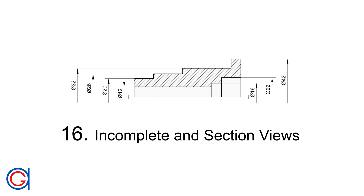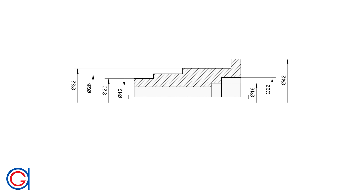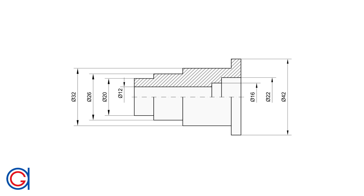Rule 16: How to dimension incomplete or section views. For a half-cut section view of a cylindrical shape, to indicate the diameters we use incomplete dimension lines that elongate a few millimeters past the symmetrical center axis. For the internal diameters in a half-part section, we dimension the same way, and for external diameters we dimension like a complete part. These views are very useful to dimension internal and external features in one drawing, and in both cases we use the diameter symbol.